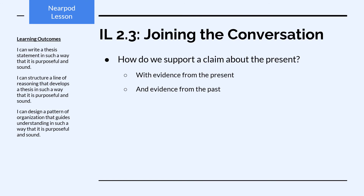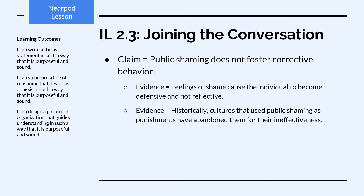What about the present? To support a claim about the present, we can use evidence from the present, but also from the past. For instance, if I claimed that public shaming does not foster corrective behavior, I could support it with a present-tense statement — that feelings of shame cause the individual to become defensive rather than reflective — and also with historical evidence that cultures which have used public shaming as punishment have since abandoned it for its ineffectiveness.